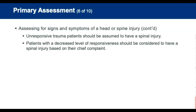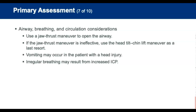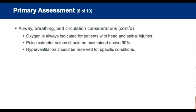Patients with a decreased level of responsiveness should be considered to have a spinal cord injury. If spinal injury is suspected, open and assess the airway — manually hold the patient's head still and use the jaw thrust maneuver. If the jaw thrust maneuver is ineffective, the head tilt-chin lift maneuver is acceptable as a last resort. Vomiting may occur in a patient with a head injury. Irregular breathing such as Cheyne-Stokes respirations may result from increased ICP. Administer high-flow oxygen; pulse oximetry should not fall below 90% and ideally should be 95% or higher. Hyperventilation should only be used when capnography is available to ensure end-tidal CO2 between 30 and 35.